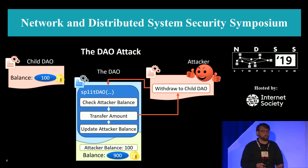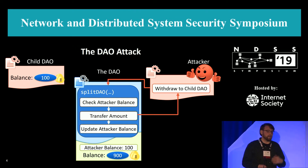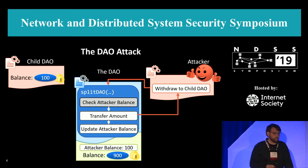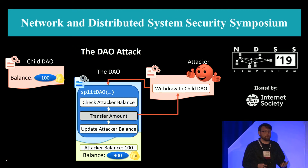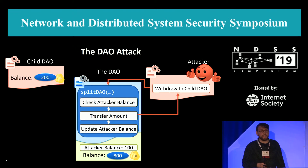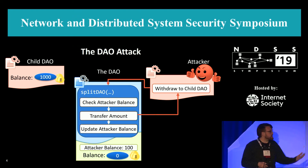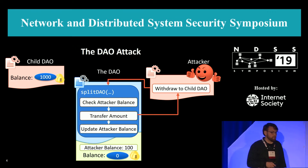Now the attacker can execute code again. Normally you would just return, accept the reward, and continue. But in the case of the DAO attack, the attacker will simply call split DAO again. If we again check the balance, the balance hasn't been updated yet — it's still 100 — and the DAO will happily transfer another 100 ETH to the child DAO. The attacker can repeat this as long as there is enough gas, and at the end there will be zero ETH left in the DAO, with everything moved to the child DAO.